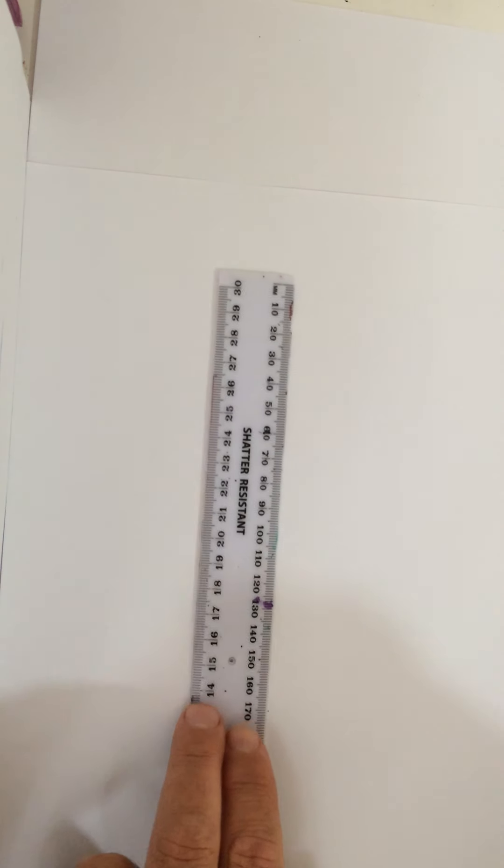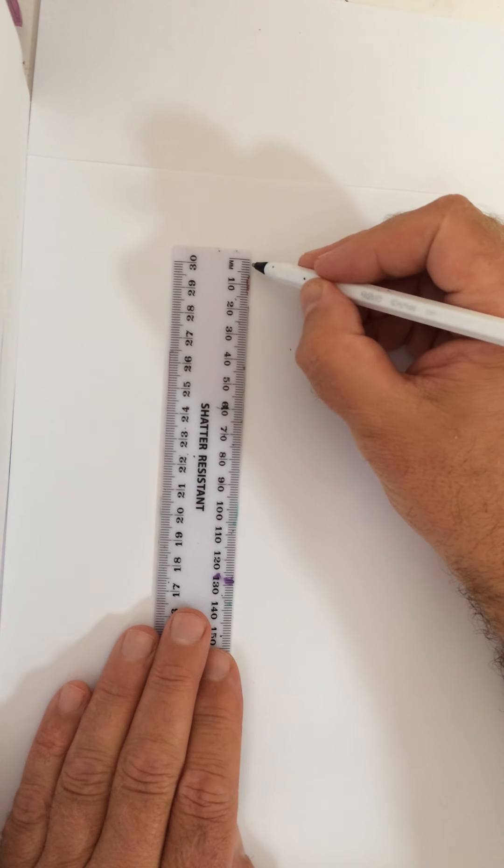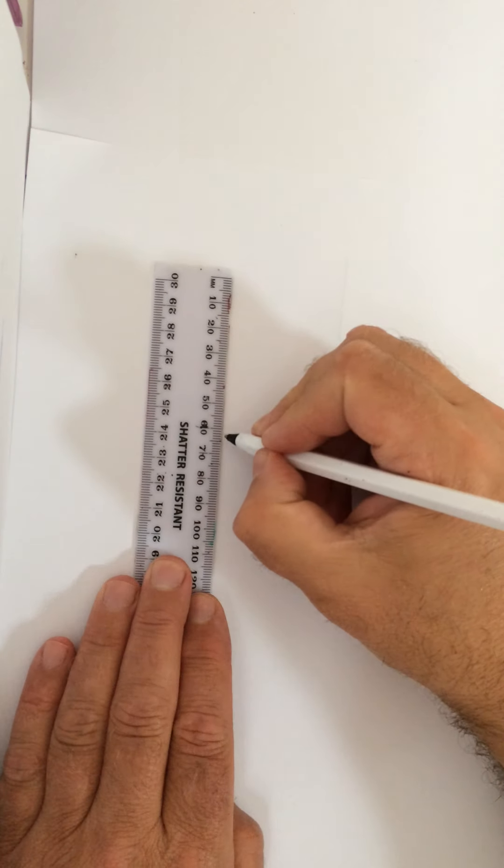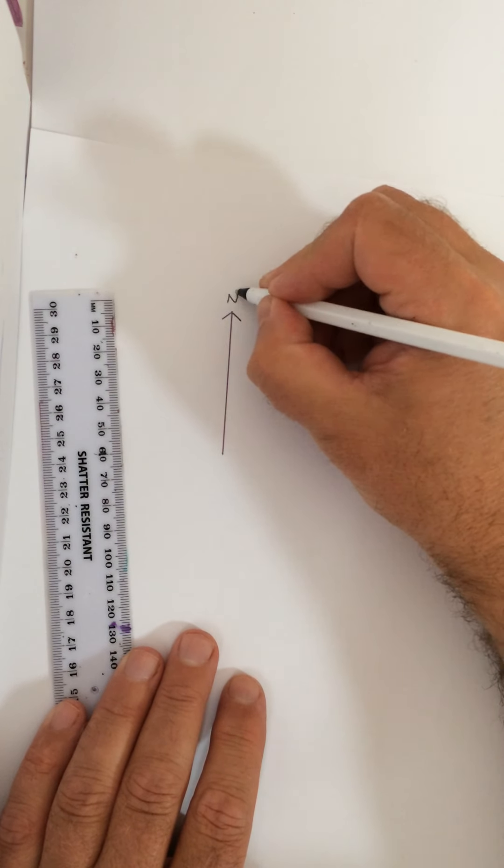Right, so as the statement you've just written down reads, a bearing is an angle in degrees clockwise from north. Bearings are always written using three digits. So here we have an example. If I want to draw a bearing, the first thing I have to do is draw my line to the north. Let me get a little paper. Our line to the north. We will always put an arrow there and put north.